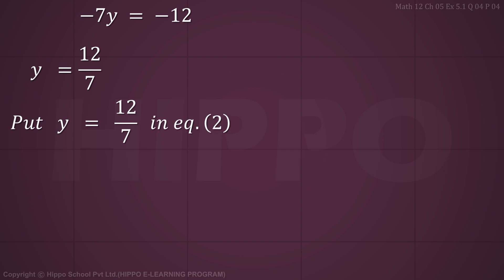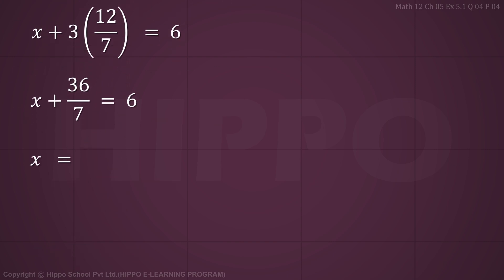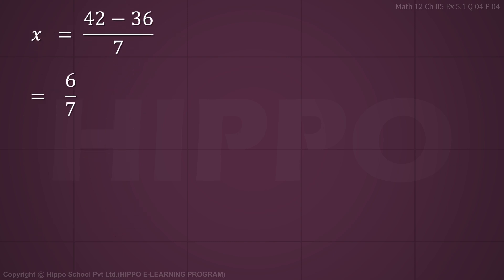Now put y = 12/7 in Equation 2: x + 3(12/7) = 6, so x + 36/7 = 6, giving x = 6 - 36/7 = (42 - 36)/7 = 6/7. The intersection point is (6/7, 12/7).